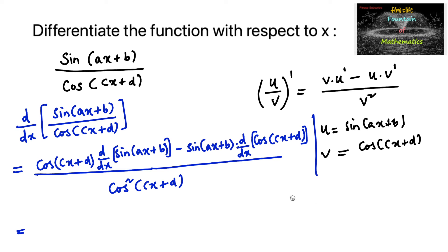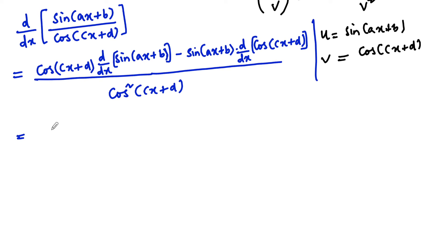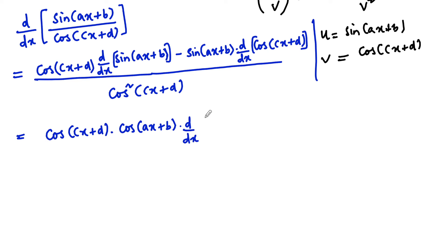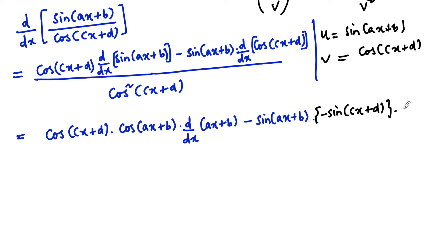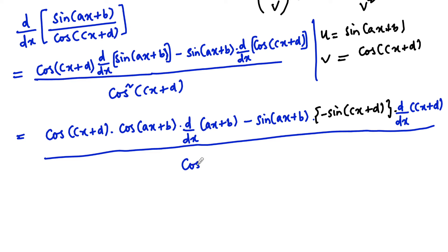Which is equal to: cos(cx + d) into differentiation of sin is cos(ax + b), into by using the chain rule, differentiation of ax + b. Minus sin(ax + b) into differentiation of cos is minus sin, so we write minus sin(cx + d), into d/dx of cx + d by chain rule, upon cos squared(cx + d).